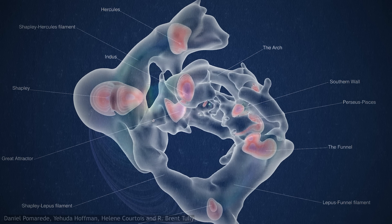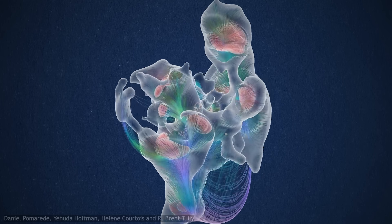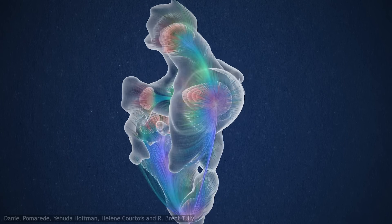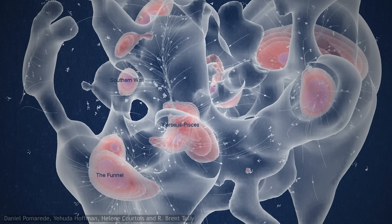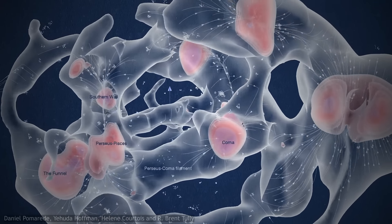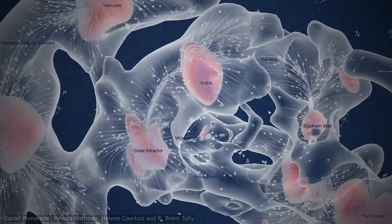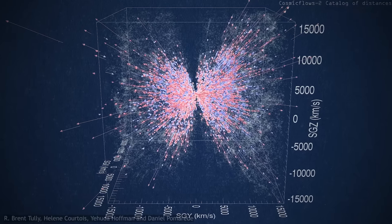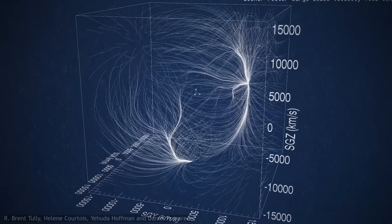They employed the Monge-Ampère-Kantorovich reconstruction technique to spring their galaxy surveys into life, changing them from static snapshots of the present-day universe into living entities, enabling them to see where these tens of thousands of galaxies near to us came from, and discern where they're going. And it was the motions of these galaxies that revealed the true extent of our local supercluster.